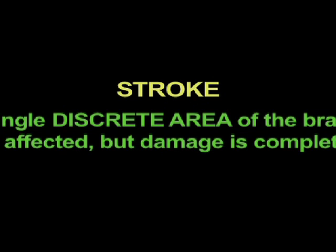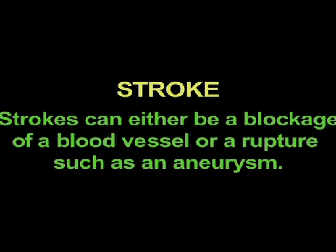Many people often confuse a stroke with a traumatic brain injury — let me explain the difference. In a stroke, there is a single discrete area of the brain that is affected, and the damage to that area is complete. Strokes can be caused by either a blockage of a blood vessel, which is the most common type, or a rupture of a blood vessel such as an aneurysm.